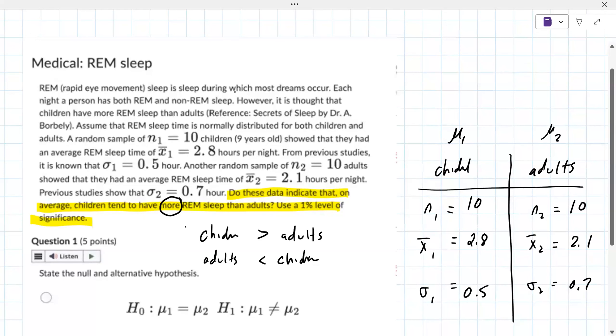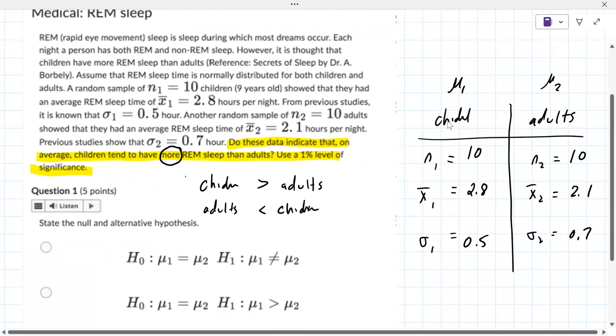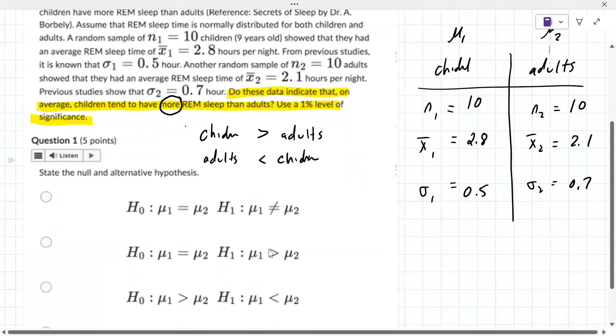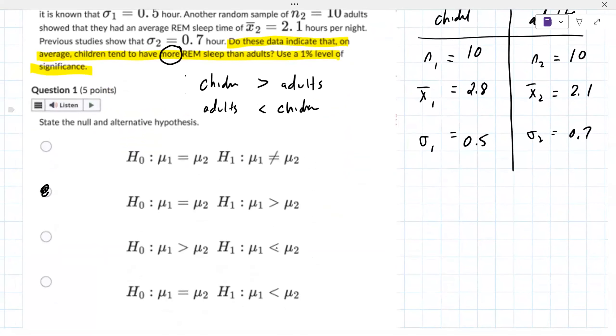We're looking at mu1 greater than mu2. That's the direction I'm looking because children are greater than adults, mu1 greater than mu2. The null hypothesis is always an equality, so that would be out. This one's going the wrong direction, it's not saying different. So that's why that is the correct answer.